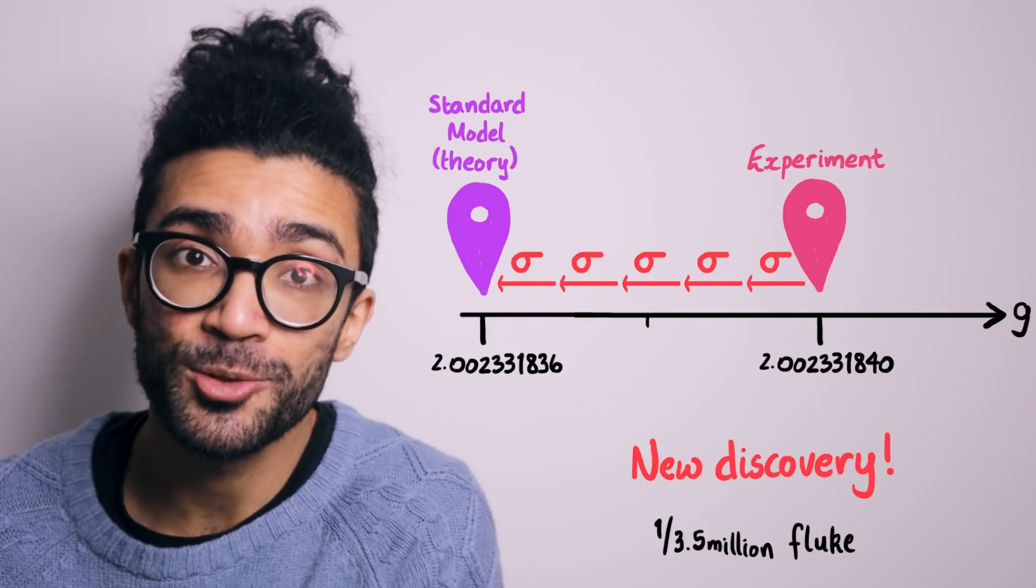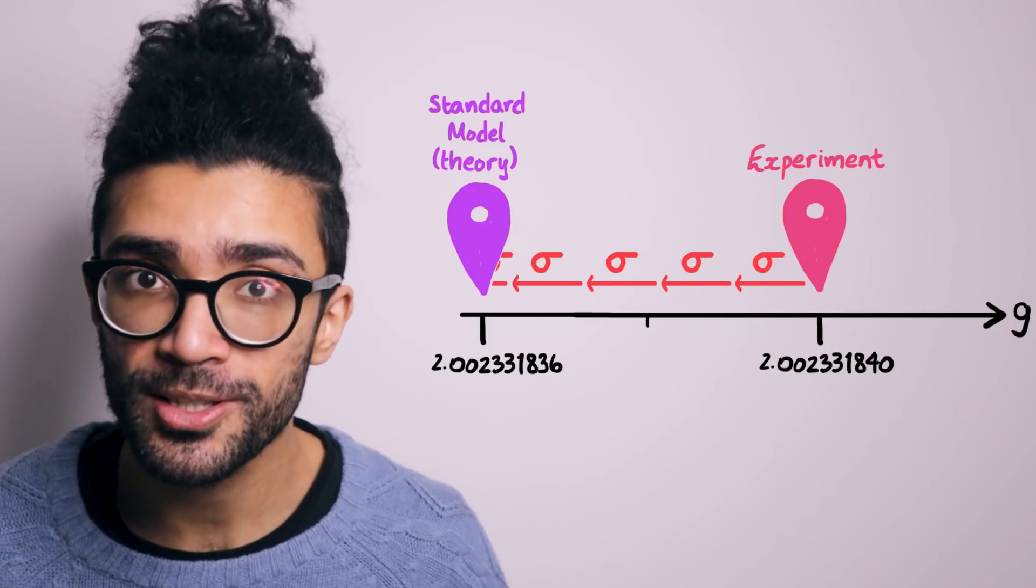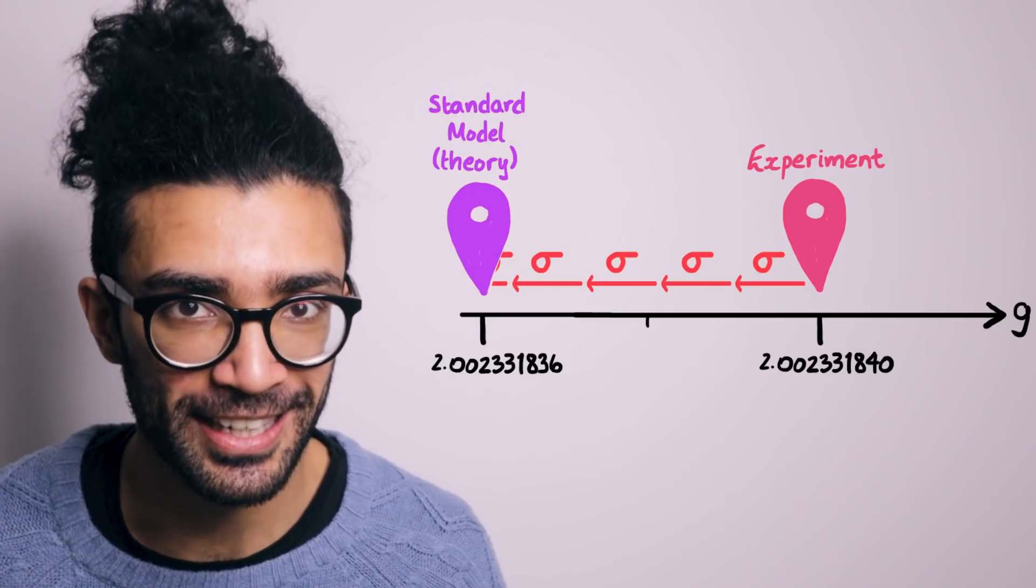Now, currently, the scientists working on this muon experiment are finding a discrepancy of 4.2 sigma, pretty close to the five sigma threshold, but not quite there yet.